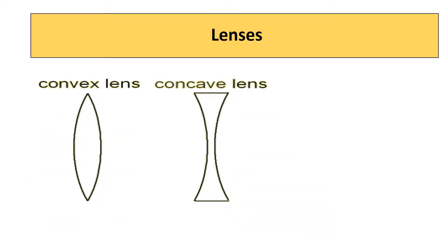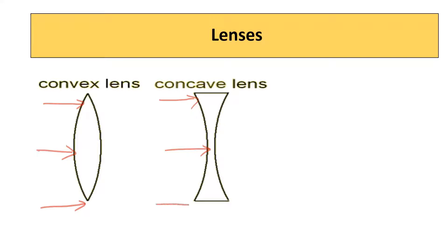Simple lenses are of two types: convex lens and concave lens. A convex lens will be thicker at the center and thinner at the edges, whereas a concave lens will be thinner at the center and thicker at the edges. Convex lens is known as converging lens and concave lens is known as diverging lens.